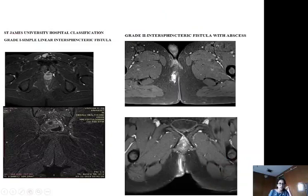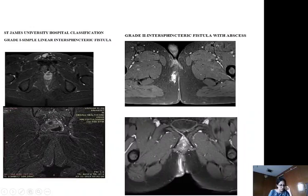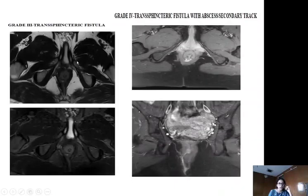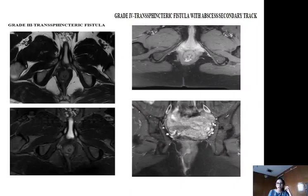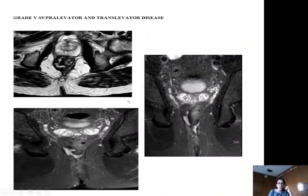This image shows high signal intensity between the sphincters, corresponding to a grade 1 simple linear intersphincteric fistula. In the second image, a high signal intensity collection is seen in the ischiorectal space, with a linear high-intensity track between the anal canal and the subcutaneous collection, corresponding to a grade 2 intersphincteric fistula with abscess. Grade 3 is a transsphincteric fistula in which a linear hyperintense track traverses the sphincter. Grade 4 is a transsphincteric fistula with abscess and secondary tracks. Grade 5 represents supra-levator and trans-levator disease.